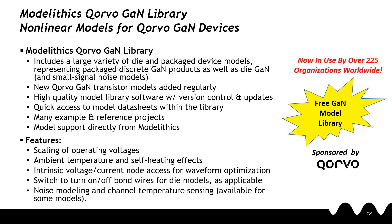The Model Ethics Corvo GAN library is just an example of what Model Ethics can do for you. Model Ethics offers custom order modeling and has several sponsored libraries such as this. If you are interested in Model Ethics developing a custom library for your company, please contact sales for more information.